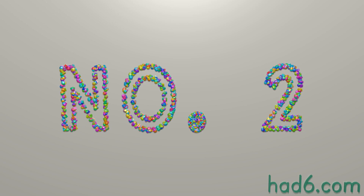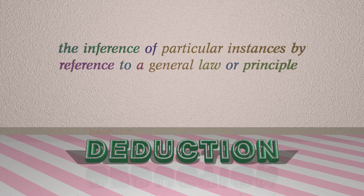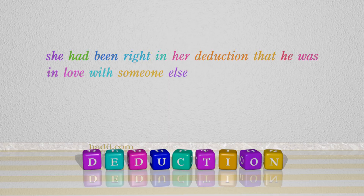Number 2: Deduction. Which means the inference of particular instances by reference to a general law or principle. For example, she had been right in her deduction that he was in love with someone else.